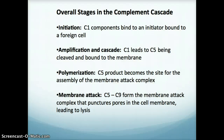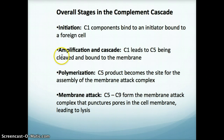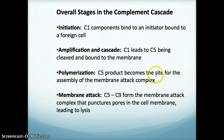The stages in the complement cascade start with initiation: a C1 component binds to an initiator on a foreign cell, recognizing it as foreign. That C1 binding leads to C5 being cleaved and bound to the membrane, adding another complement protein. Then polymerization occurs — the C5 product becomes the site for assembly of a membrane attack complex. This membrane attack complex is formed by C5 through C9, which form a complex that puts a pore into the cell membrane of the foreign cell, leading to lysis.